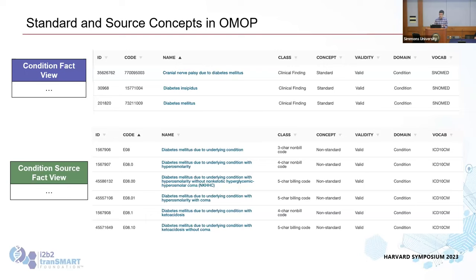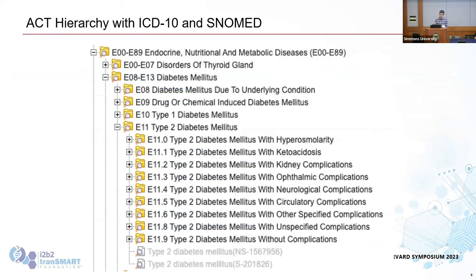Those non-standard concepts are searched in the condition source fact view. The way this plays out in the ontology is you have the ACT hierarchy — the exact same hierarchies that are in all the other ACT sites — a diagnosis hierarchy in ICD-10. There is a mapping between ICD-10 and SNOMED, so when you get down to the child node 'Type 2 Diabetes Mellitus,' it has two gray leaf nodes: one is the standard code (SNOMED) and one is the non-standard code (ICD-10). Thus you can query both types of data in a single i2b2 hierarchy.